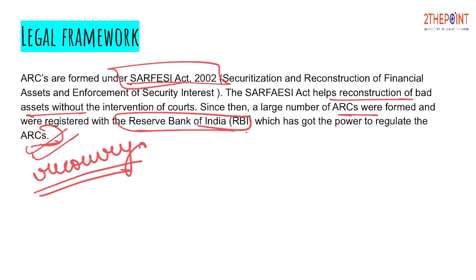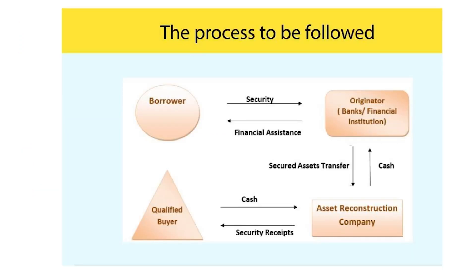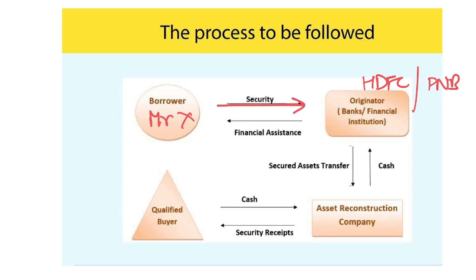Now let's look at the process again. The borrower — Mr. X in our example — approaches the originator, let's say HDFC Bank, for a certain amount of loan. Mr. X provides certain collateral assets or a guarantee: in case he doesn't pay, the bank can sell his assets and recover the money. Once the assets are kept with HDFC and all formalities are done, HDFC provides financial assistance, i.e., the loan. These are the two key transactions between the borrower and the bank.